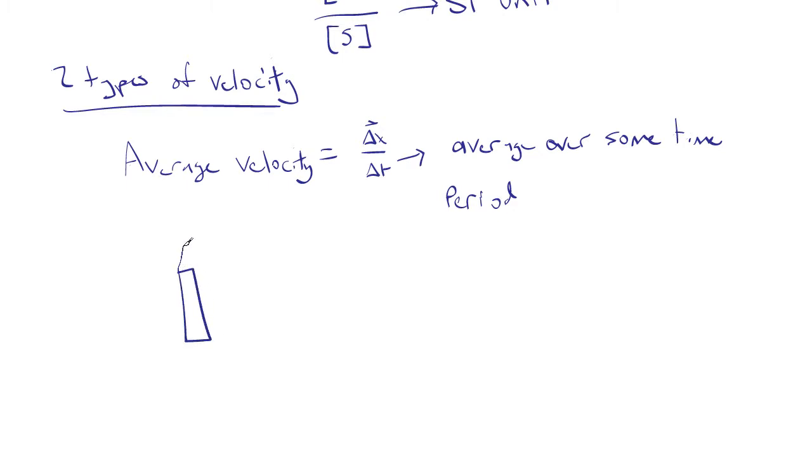So let's just do a really quick example of calculating the average velocity. I like rockets, so let's do a rocket example. A rocket is launched from a rocket launching pad and travels to about 500,000 meters above the surface. And that trip takes about eight minutes. The question is, what's the average velocity?